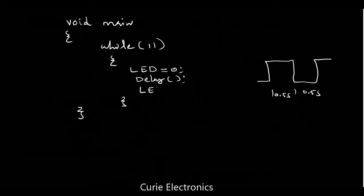Inside the while loop: LED equals 0, then delay, then LED equals 1. I am not showing you how to write the delay function here — you can see it in the program. The while(1) is always going to be true, so this program will keep running LED equals 0, delay, LED equals 1 — repeating infinitely.